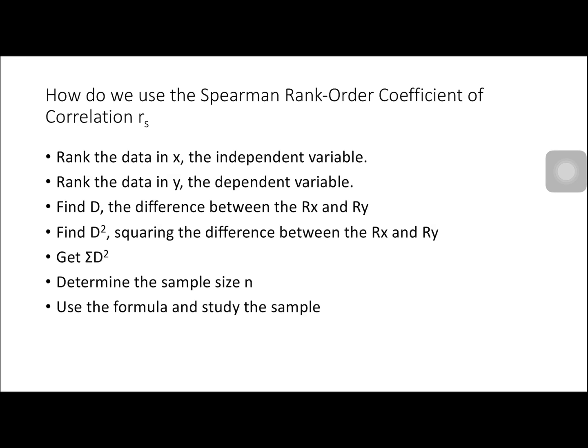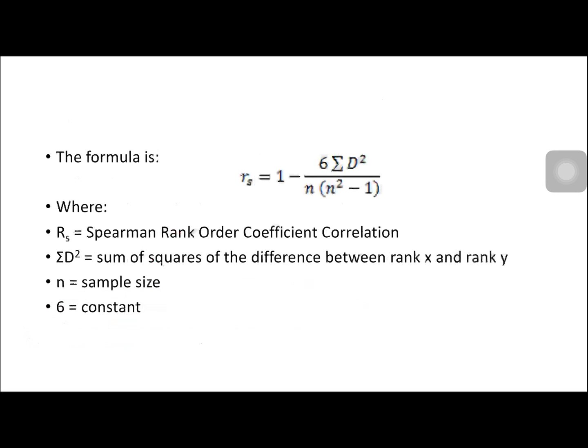To use the Spearman Rank Order Coefficient of Correlation RS, we first rank the data in X — the independent variable — then rank the data in Y — the dependent variable. Then find the difference D, which is the difference between RX and RY. Find D squared by squaring that difference, get the summation of D squared, determine the sample size N, use the formula, and interpret the result.